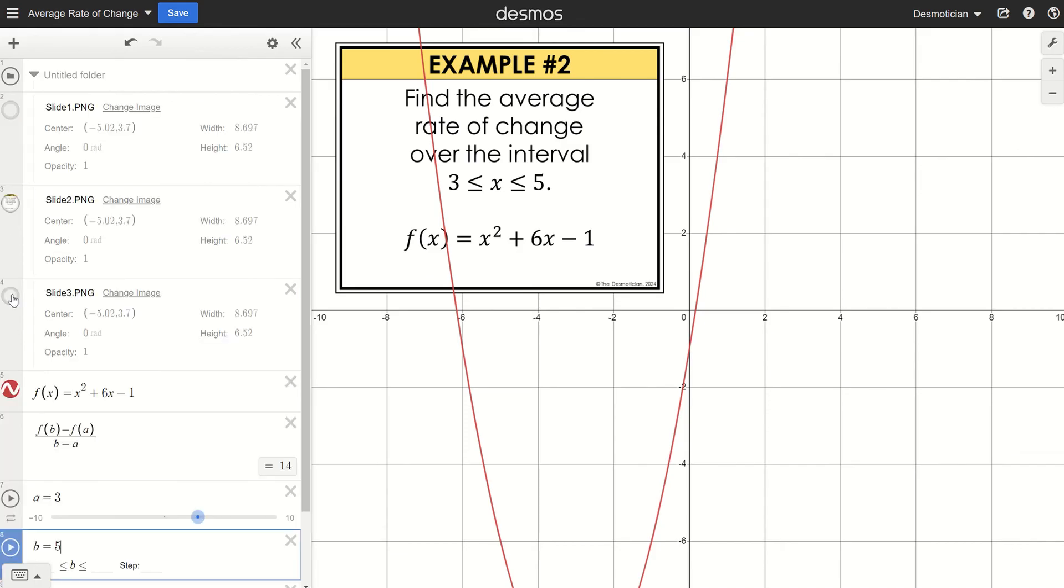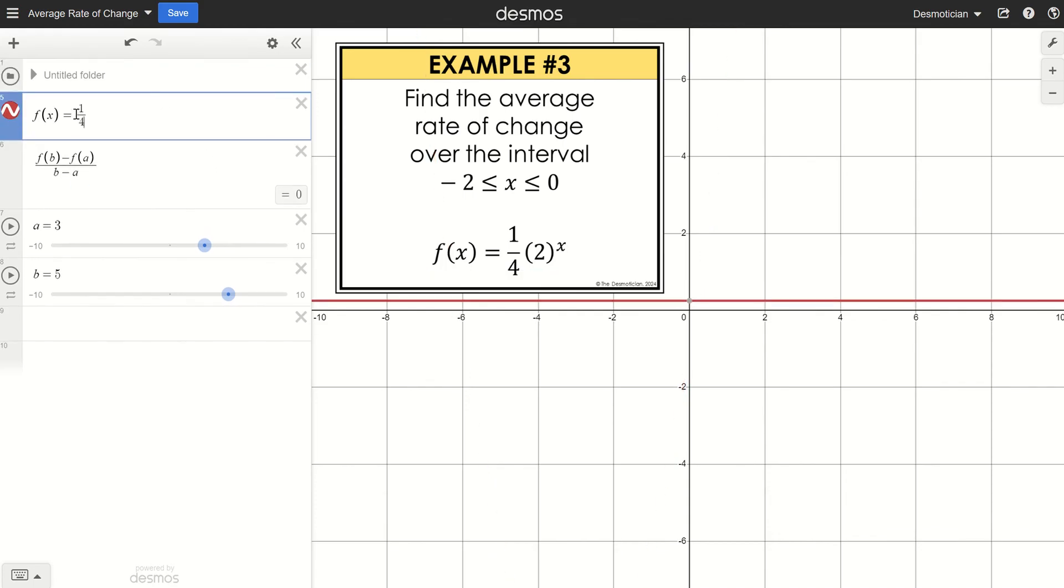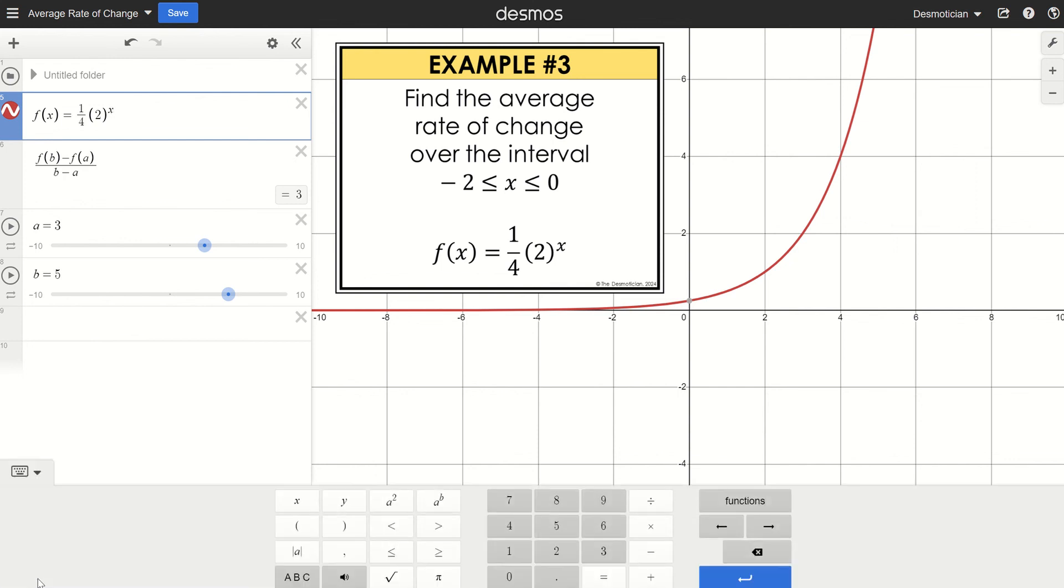Alright, last example. And this is an exponential function. When I type in 1 divided by 4, my cursor is in the bottom, so I'm hitting the arrow to the right to bring it out of that fraction. And to make that exponent, I hit shift 6 on my keyboard, or you can go down here to this keypad and click this A to the B button and type in x as your variable.